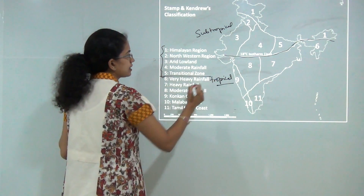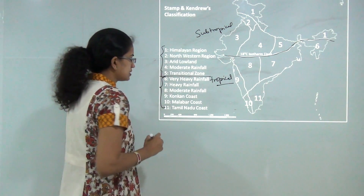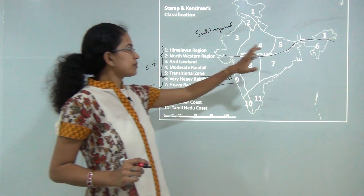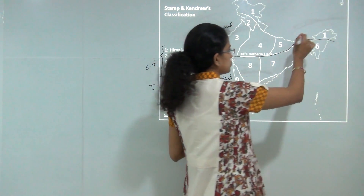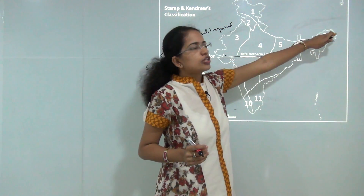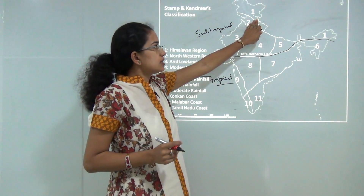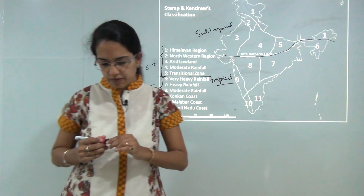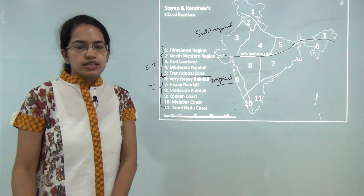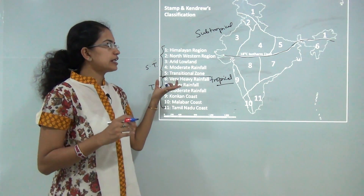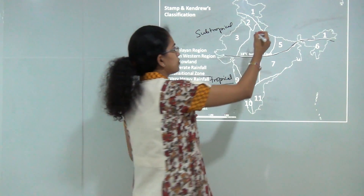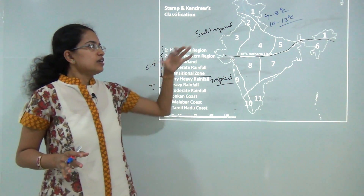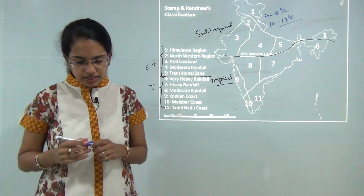The first five regions are classified under subtropical and the last six under tropical. Starting with the subtropical: Region 1 is the Himalayan region, covering the northeastern states, Jammu and Kashmir, northern Himachal Pradesh, northern Uttarakhand, Leh, Ladakh, and Lahaul-Spiti. This region has mild summers and cold winters — temperature is 4 to 8 degrees in winter and 10 to 12 degrees Celsius in summer, with mainly coniferous and pine vegetation.